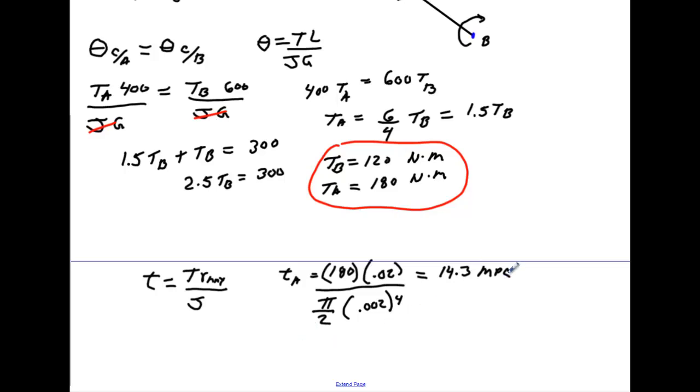We do it for the shear stress at B. The shear stress at B is going to equal the torque at B, which is going to be 120 times the max radius divided by the polar moment of inertia. And that gives us 9.55 megapascals.